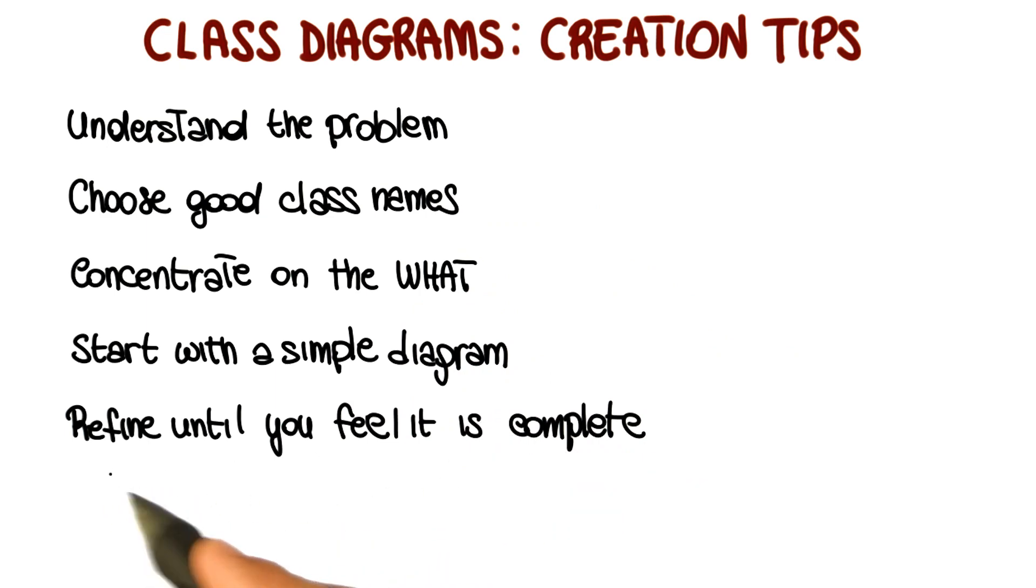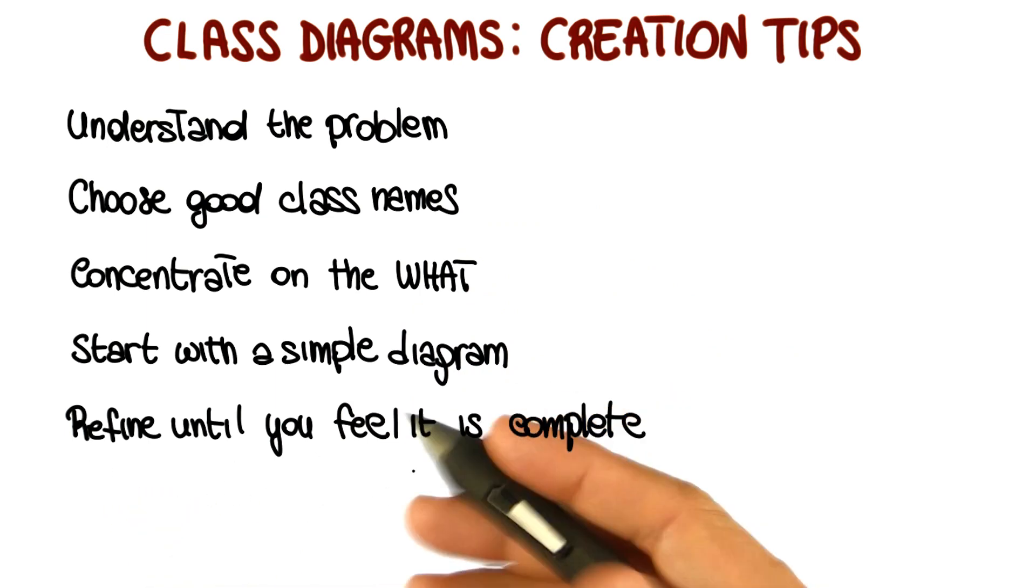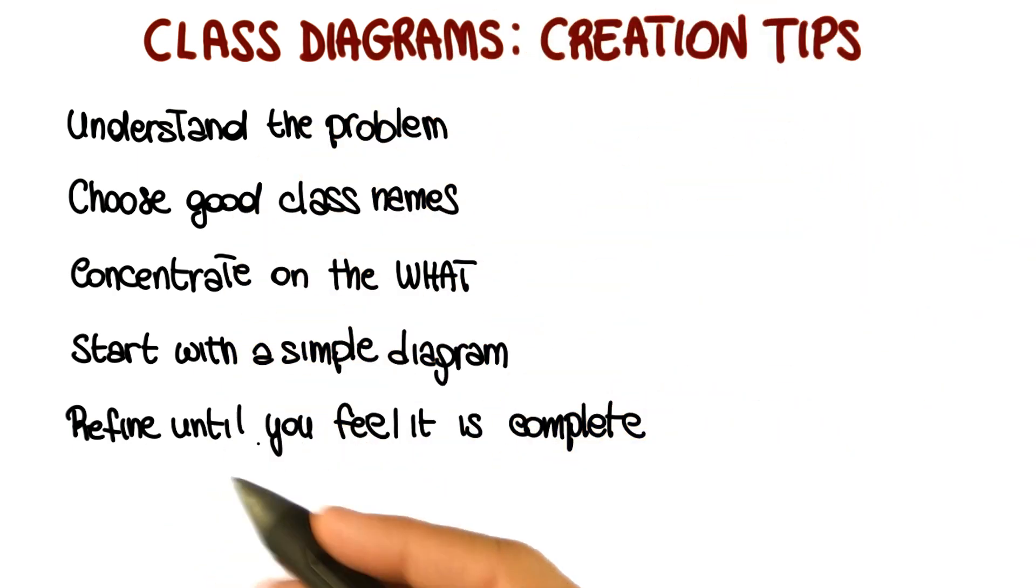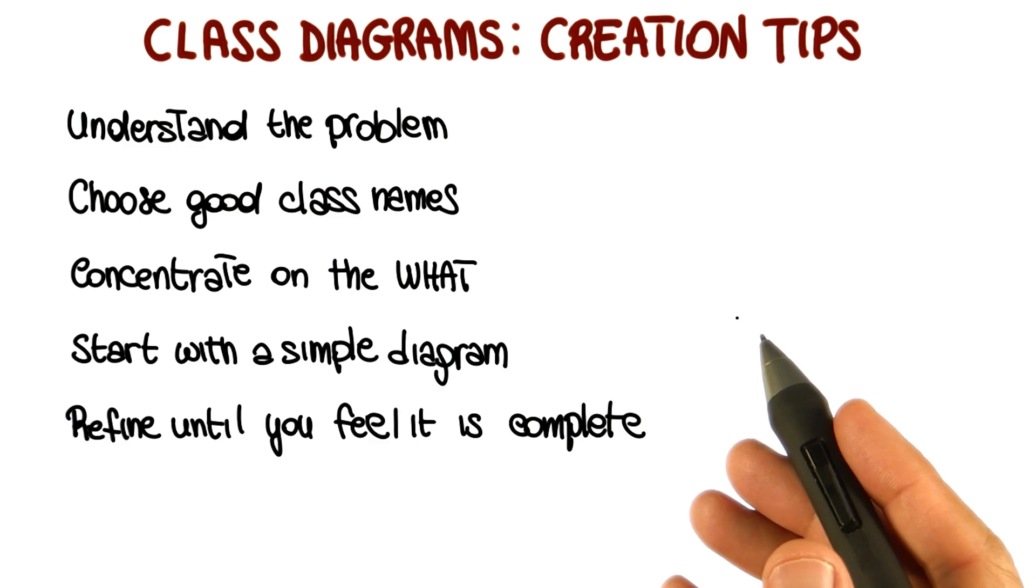And if you proceed in this way, then make sure to refine until you feel the class diagram is complete. Until you feel that you represent the system that you're supposed to build. So your final goal should be to have a class diagram that is complete, so it represents all of the relevant entities in the system and their characteristics, and it's correct. So it represents it in the right way.